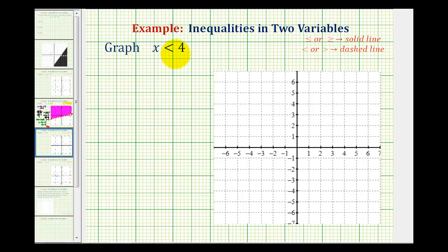We want to graph the inequality x is less than 4 on the coordinate plane, which means we want to shade the region that contains the points with the ordered pairs that would satisfy this inequality.